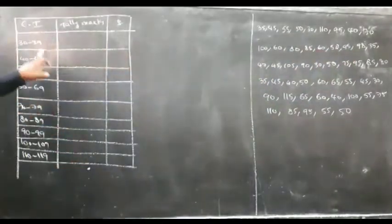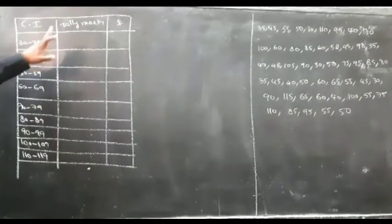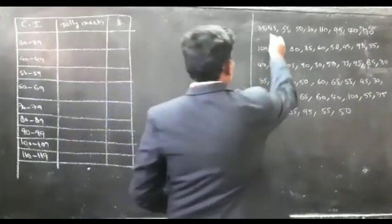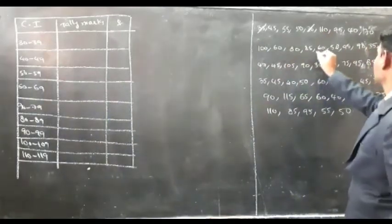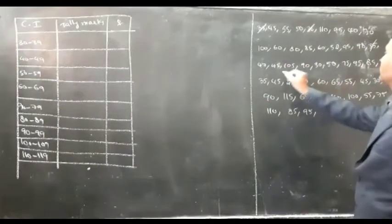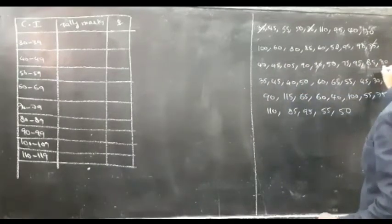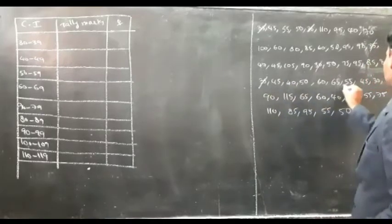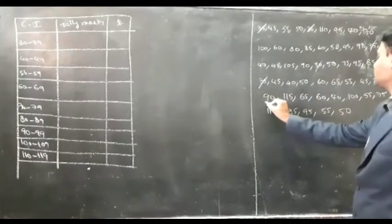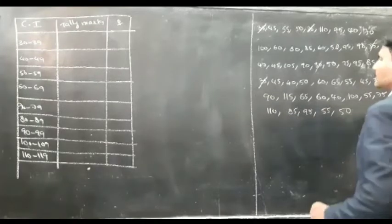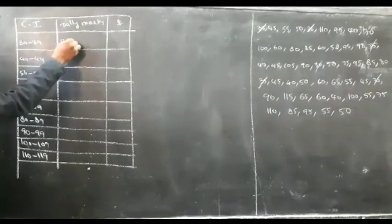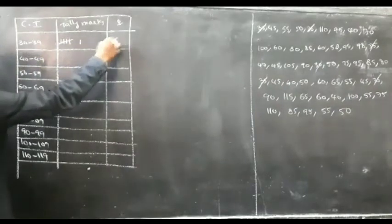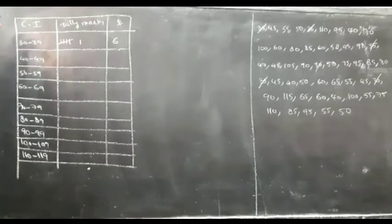Now, between 30 and 39, count how many values are there. There are 6 — arranged as 1, 2, 3, 4, 5, and 6. So the number of oranges in the class 30 to 39 is 6.